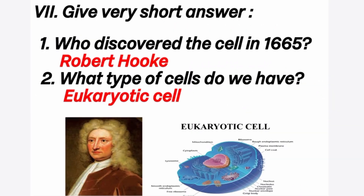Seventh, give very short answers. First question: who discovered the cell in 1665? Answer is Robert Hooke. Robert Hooke discovered the cell in 1665. Second question: what type of cells do we have? There are two types of cells: prokaryotic cells and eukaryotic cells.